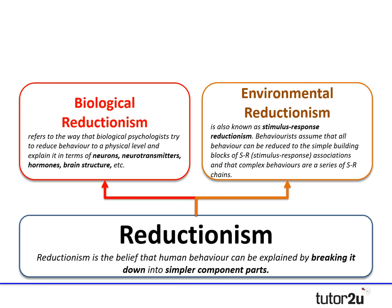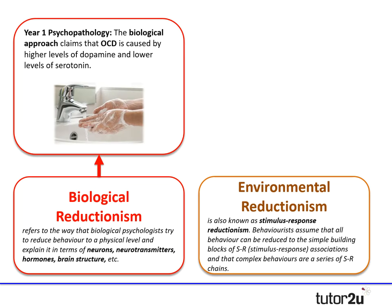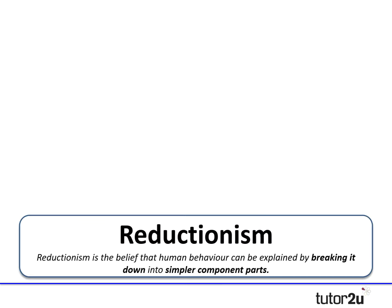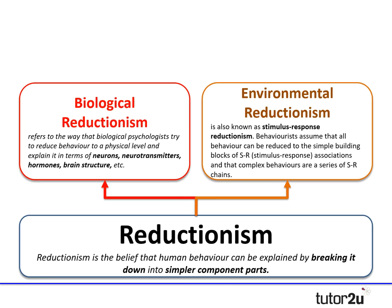It's useful to consider these within the context of examples. For biological reductionism, using a year-one psychopathology topic: the biological approach argues that OCD is caused by higher levels of dopamine and low levels of serotonin — that's a biologically reductionist point of view. For environmental reductionism, the behaviourist approach argues that phobias are caused by classical conditioning and maintained through operant conditioning — that's an example of environmental reductionism.